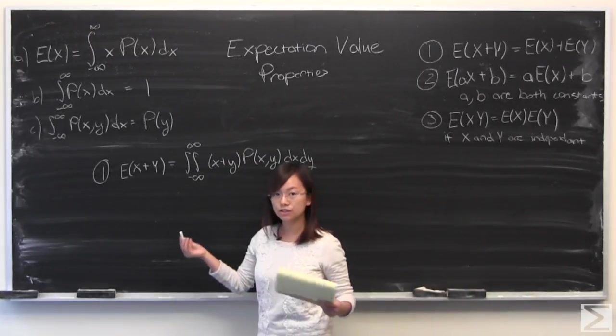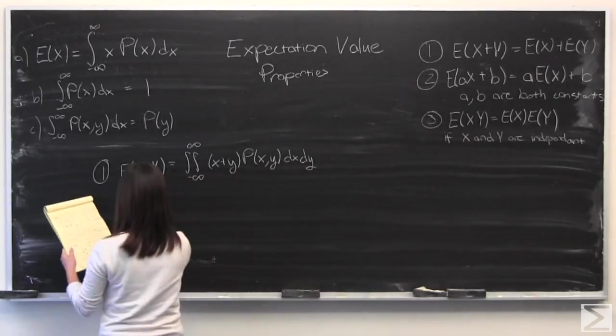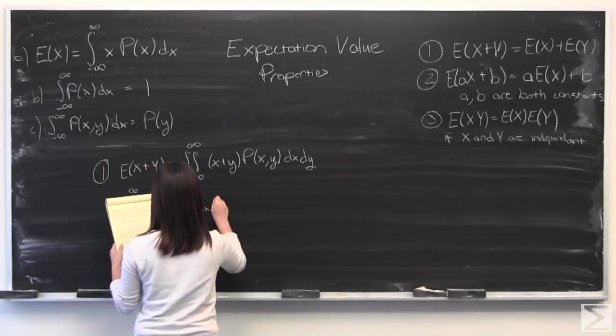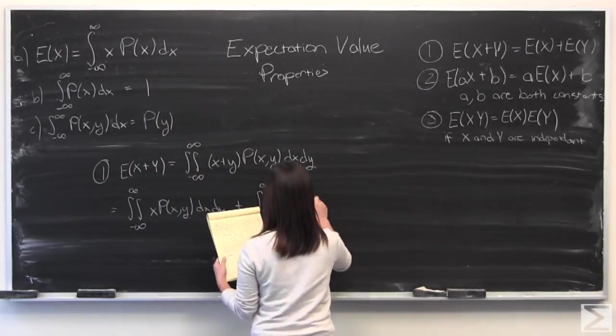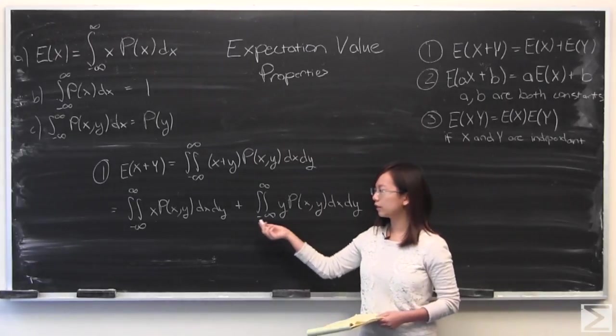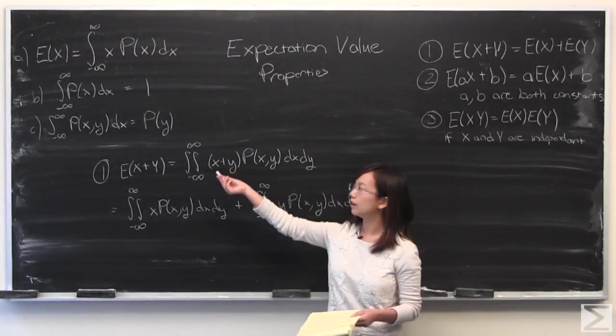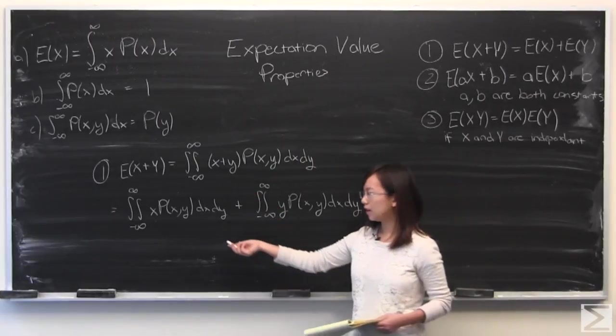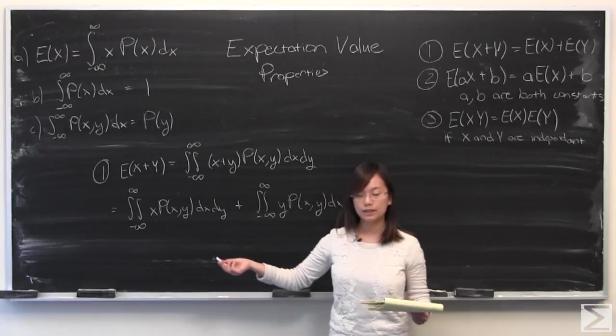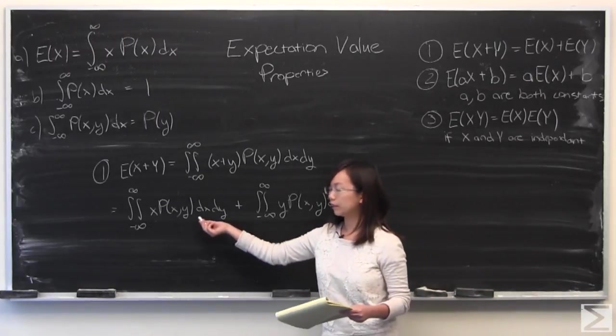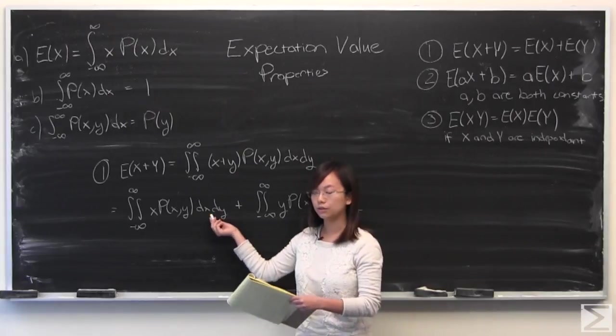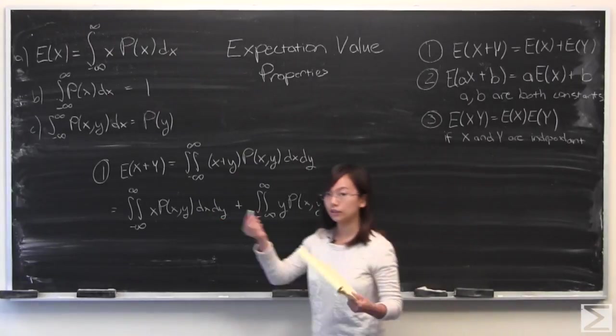I'm going to start by distributing and rearranging terms so things are easy to look at. After I've rearranged terms to look like that, you can see that if you apply property C up there, you'll be able to pull out from one integral a probability density function for x and a probability density function for y by integrating with respect to y here and x here, and what you'll get is this.